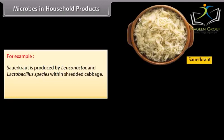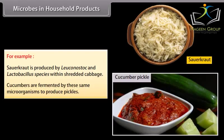There are many food products which are formed from microbes. For example, sauerkraut is produced by Leuconostoc and Lactobacillus species within shredded cabbage. Cucumbers are fermented by these same microorganisms to produce pickles.